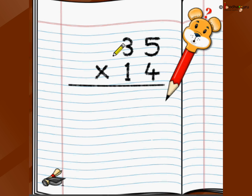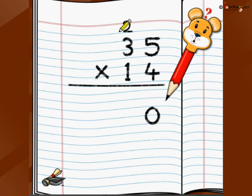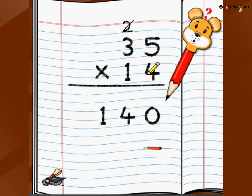This time we would like to multiply 35 by 14. We start with the first digit of the multiplier, which is 4. 4 × 5 is 20, so we write 0 here and carry 2 to the carry position. Then 4 × 3 is 12, plus 2 carry-over is 14. We write 4 here and carry 1, but there is no other digit so we write 1 here. So from 4 × 35 we got 140.